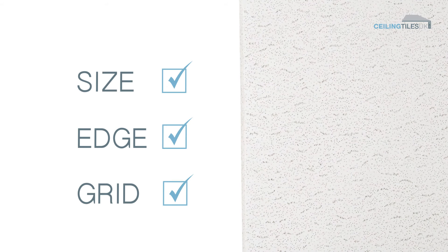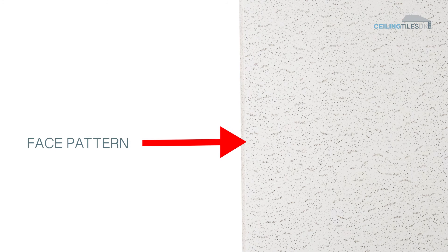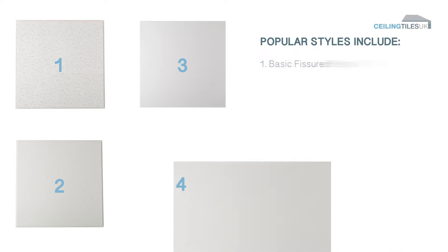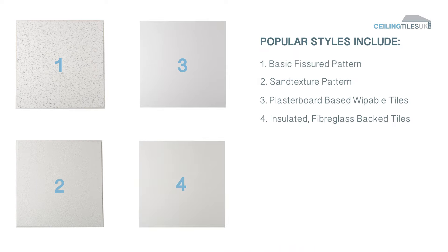Step 4: Face pattern. Once you have identified the size, edge and grid combinations, it is simply a case of matching the face pattern of the tile. Popular styles of tile include the basic fissured pattern, sand texture pattern, plasterboard-based wipeable tiles and insulated, fiberglass-backed tiles.